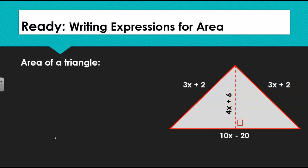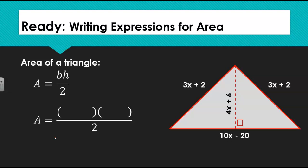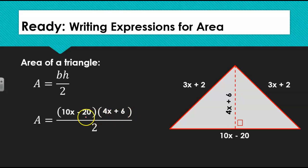In our second example, we are finding the area of the triangle. We know the formula for finding the area of a triangle is base times height divided by 2. We know that the base of our triangle is 10x minus 20 and the height is 4x plus 6. First we will need to multiply our two linear expressions in the numerator to get a trinomial and then divide that by 2.